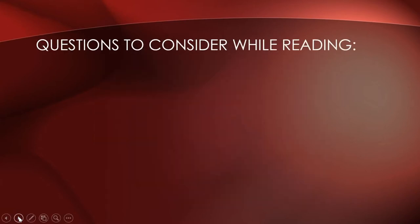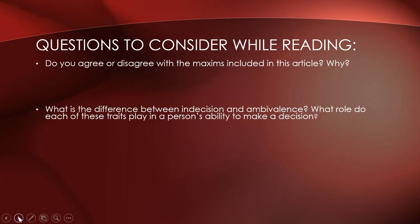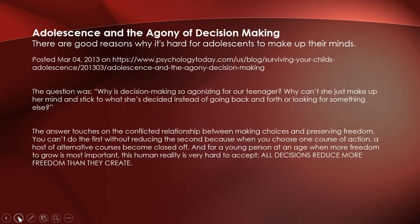Consider the following questions while we read. Do you agree or disagree with the maxims included in this article and why? What is the difference between indecision and ambivalence? What role do each of these traits play in a person's ability to make a decision? And what conclusions does the author make about making choices? Why do you think the author includes these words of advice from Yogi Berra: when you come to a fork in the road, take it, to end the article? Follow along and notice what I choose to highlight.